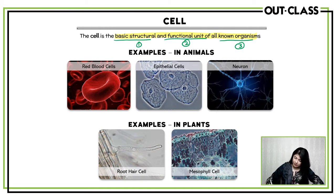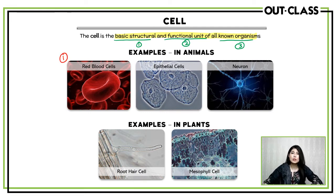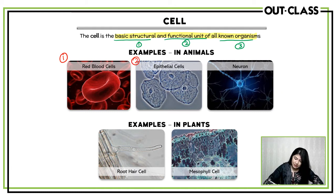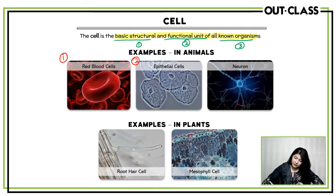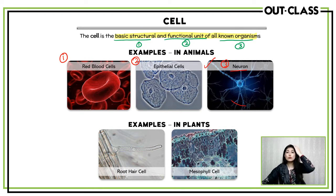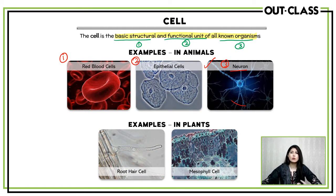In animals, we have multiple examples. The first is red blood cells, which transport oxygen in the body. After that, we have epithelial cells, which make up our skin and mouth. The third example is neurons, also called nerve cells, which are found in our brain, spinal cord and body. They are also a type of cell.